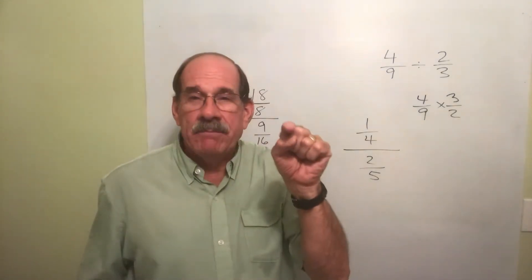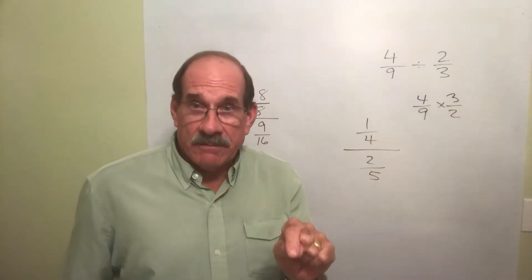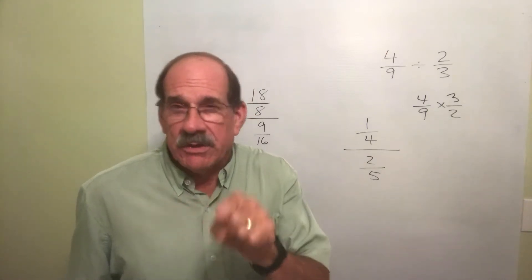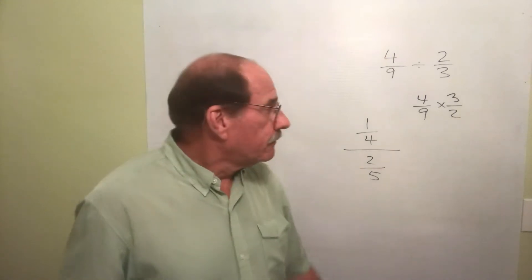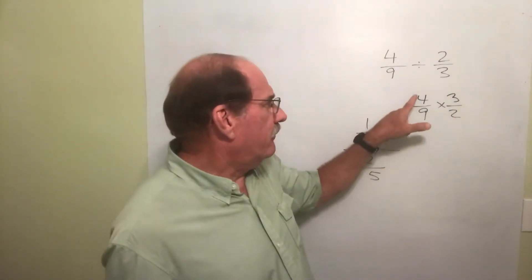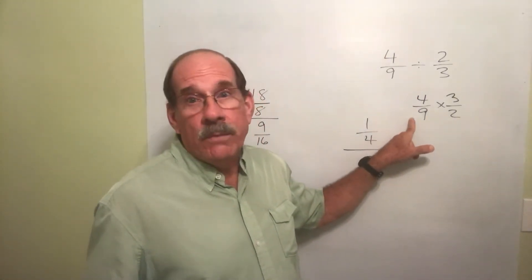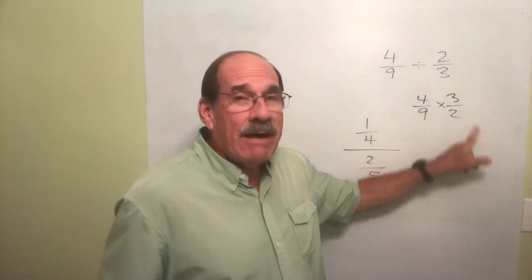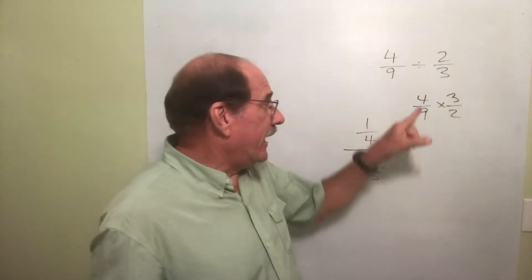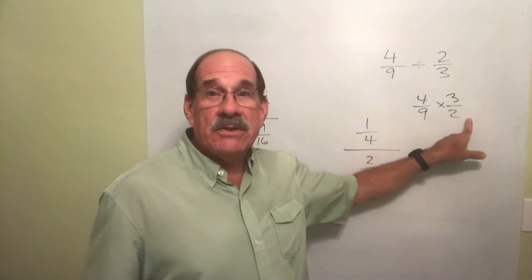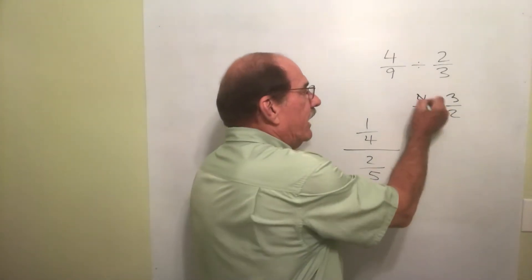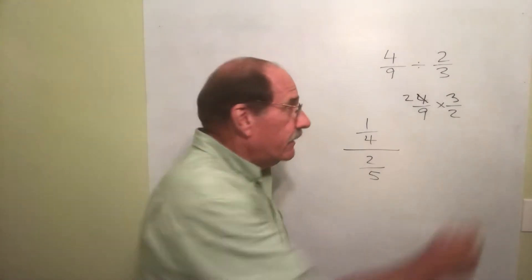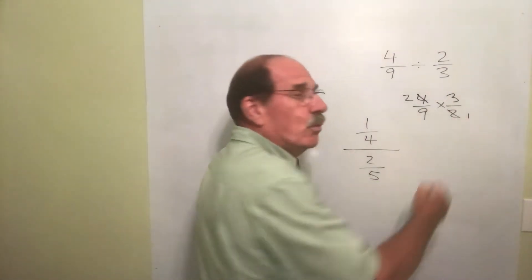Meaning, any number on the top with any other number on the bottom, either in the same fraction or different fraction, if they'll divide by the same number, you can do that. Meaning, now wait, can I divide four and nine by the same number? No. Can I divide three and two by the same number? No. But I can divide four and two by the same number. Let's divide both those by two. So this divided by two is two. This divided by two is one.